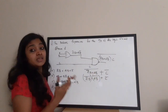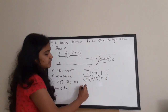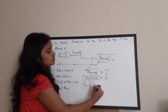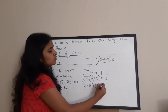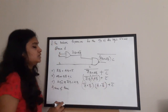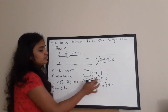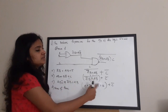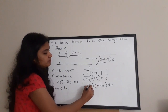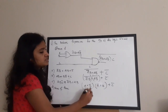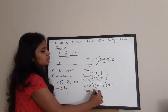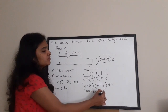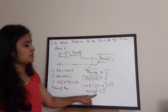Now we have (A + B̄)(Ā + B) + C̄. Expanding the brackets: A·Ā = 0, A·B = AB, B̄·Ā = ĀB̄, B̄·B = 0. The zero terms cancel, leaving AB + ĀB̄ + C̄. So the simplified Boolean expression is AB + ĀB̄ + C̄.